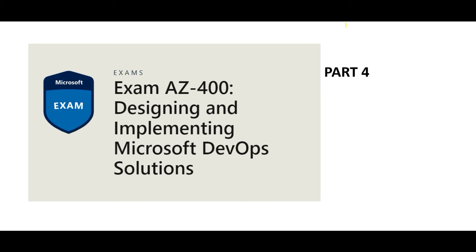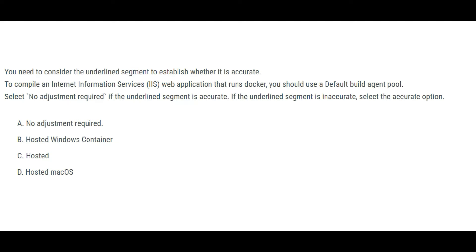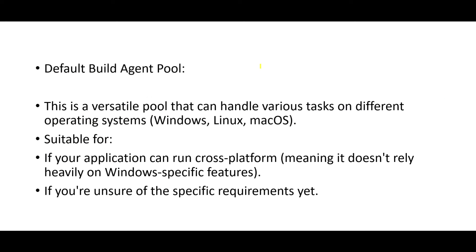Hey, welcome to part 4. We will look at some more questions today. The previous parts are in the Cloud Kernel or Cloud Ninja members area. In this question, you are trying to compile an IIS web application that runs Docker, and they are saying to first use the default build agent pool.